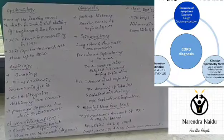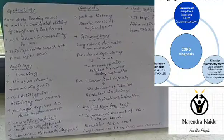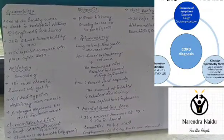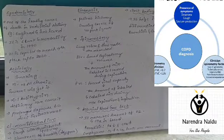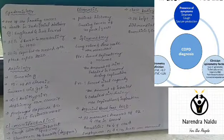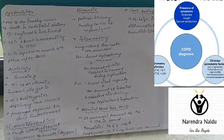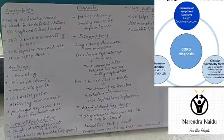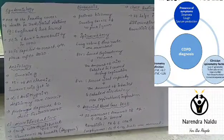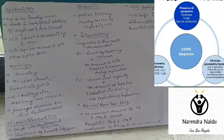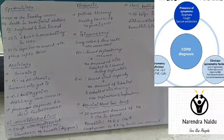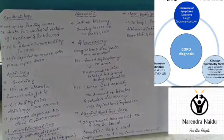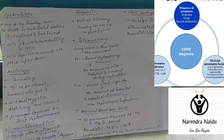COPD is one of the leading death-causing diseases in industrial nations due to pollution. The main etiological cause is smoking — 15% of smokers will develop COPD. Symptoms include cough with or without sputum and dyspnea, which is shortness of breath.